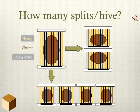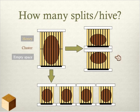The answer really depends on what you want to get out of making these splits — there are many purposes. Often it is best to make splits as equal as possible, except for the queen, who can only go in one. Making them equal gives each an equal chance to build up at the same rate and reach the same stage by the time they go into winter. This applies whether you're making two ten-frame splits or four to five frame splits.